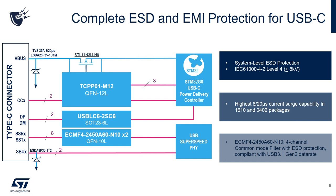We do recommend capacitors on the communication lines just for EMI reasons during the PD communication. While USB PD port is one of the key features of USB Type-C, there is also the alternate mode for super speed data. This is a complete ESD and EMI protection solution for USB Type-C power delivery. We have our common mode filters such as the ECMF4-2450-A60 on super speed lines and protection on D-plus and D-minus such as the USBLC6-2SC6. For the V-Bus power switch, we have the STL11N3LL-H6, the N-channel MOSFET as a power switch working together with the STM32G0 with the UCPD controller for USB Type-C power delivery.